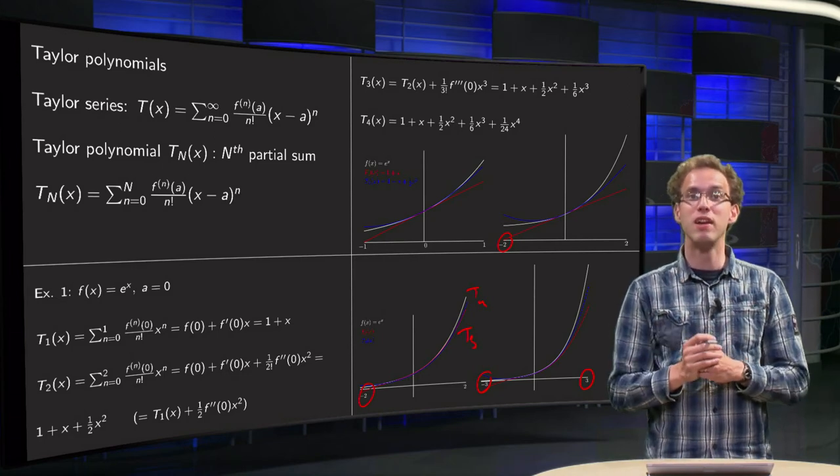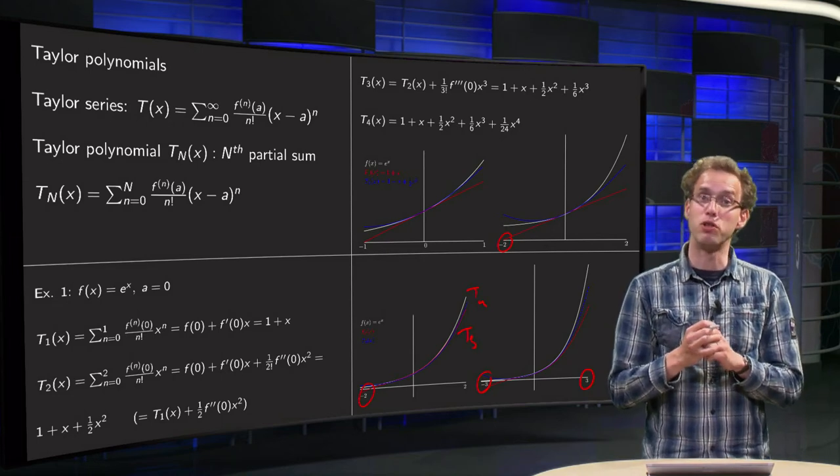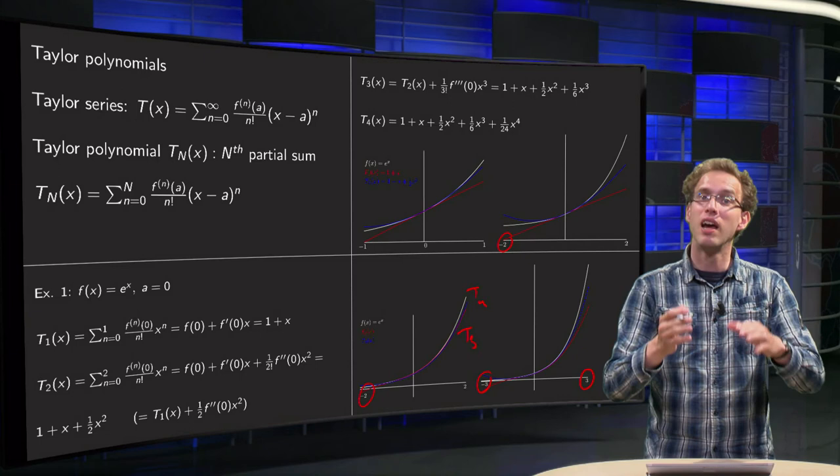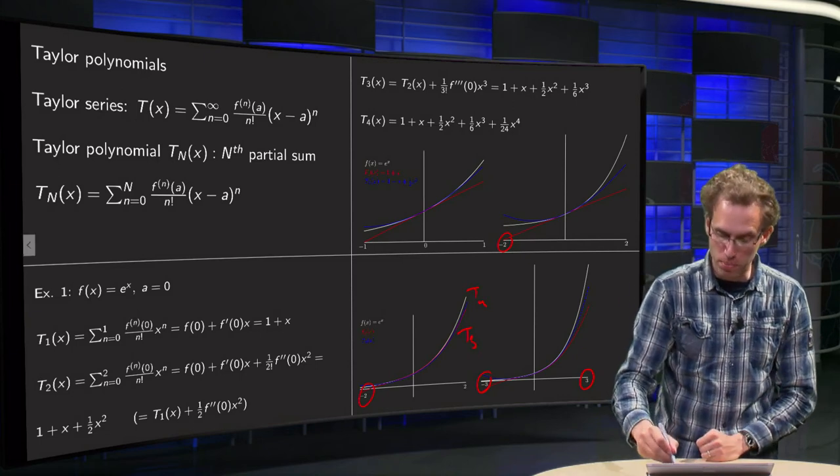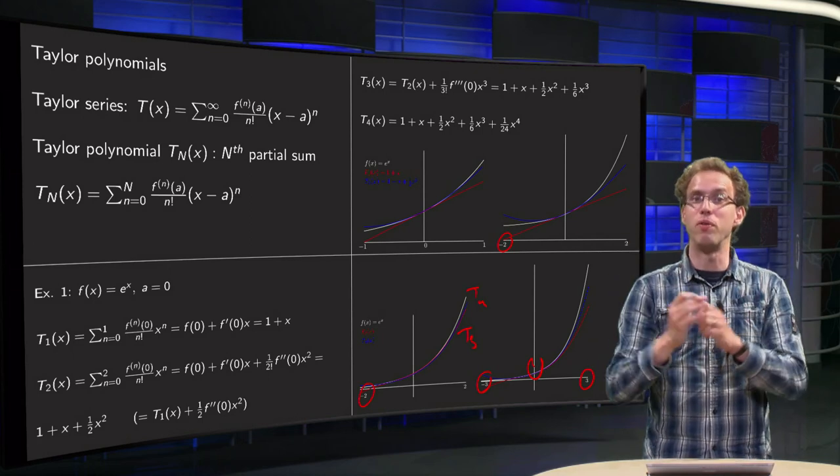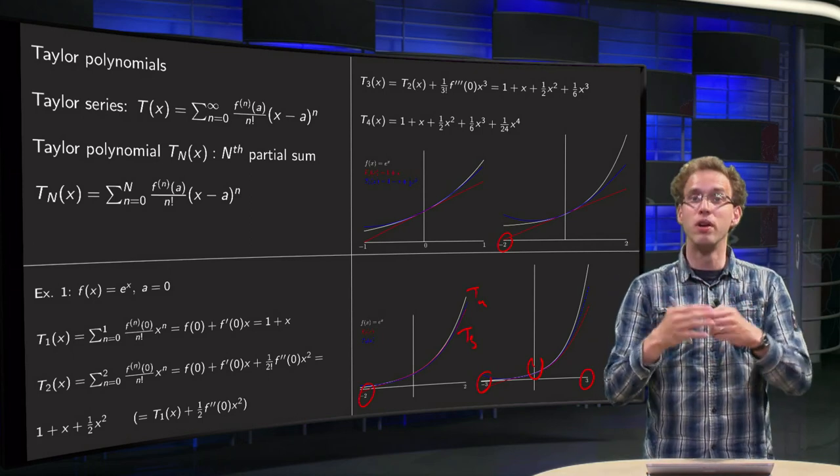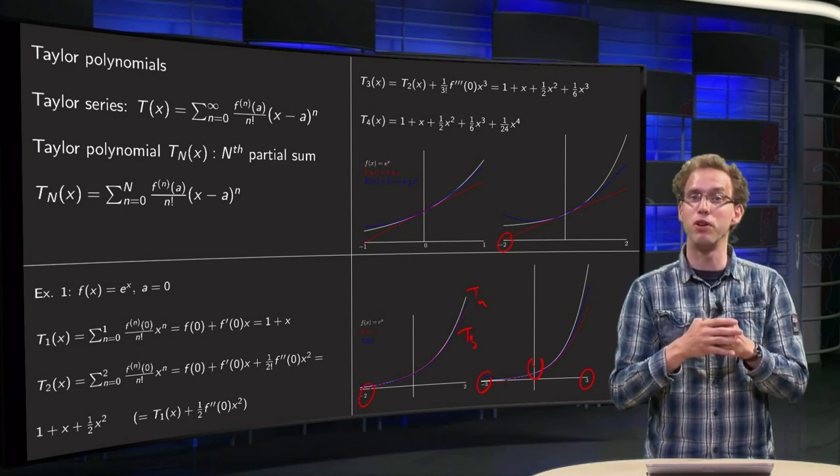So what do you learn from this? A Taylor polynomial can be a very good approximation for your function, as long as you are sufficiently close to the point about which you are approximating, zero in this case. If you go further and further away, in general you will need to keep more and more terms of your Taylor polynomial, so you will need a bigger and bigger Taylor polynomial.